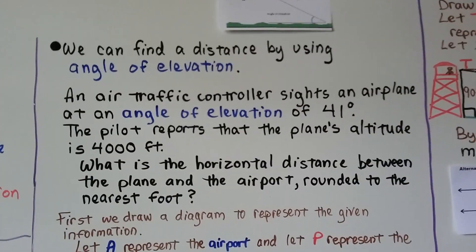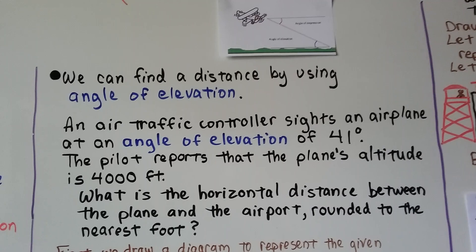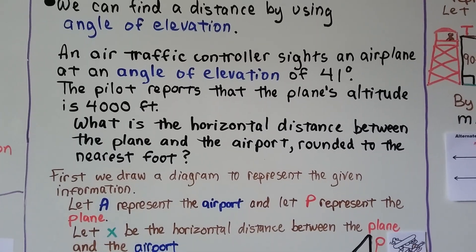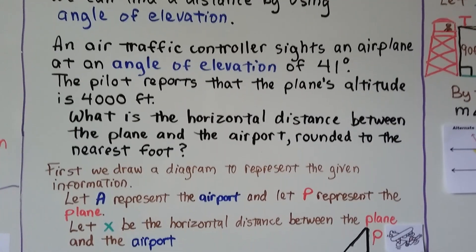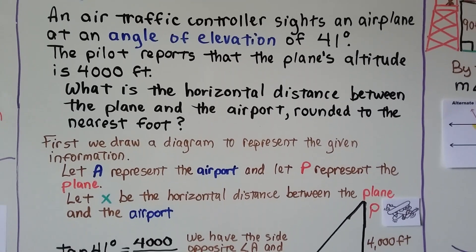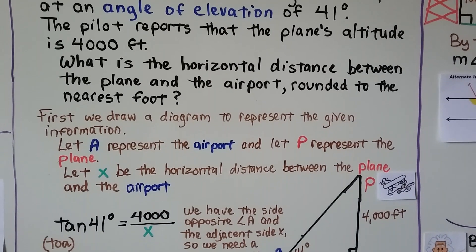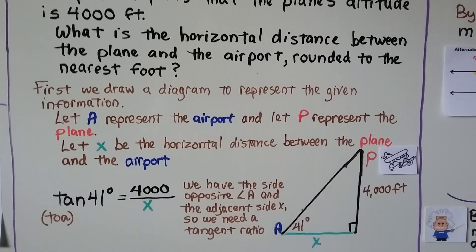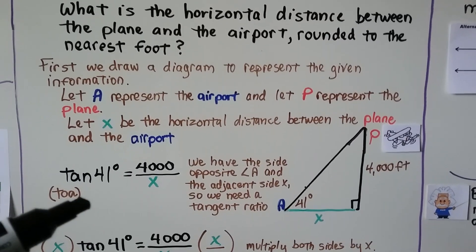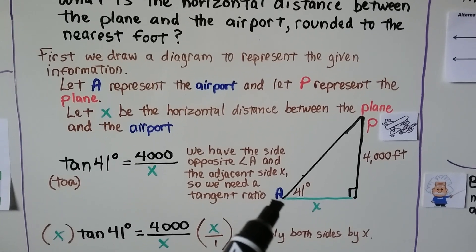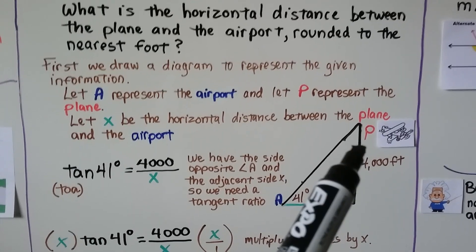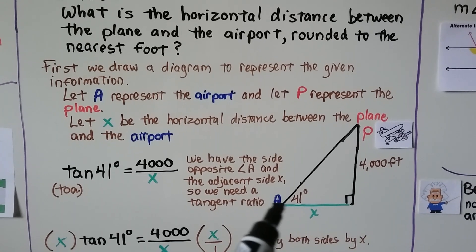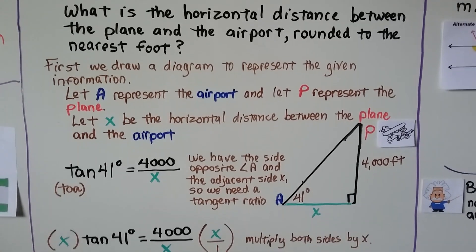We can find a distance using angle of elevation. An air traffic controller sights an airplane at an angle of elevation of 41 degrees, and the pilot reports the plane's altitude is 4,000 feet. What is the horizontal distance between the plane and the airport rounded to the nearest foot? We draw a diagram: A represents the airport, P represents the airplane, and X is the horizontal distance between them.